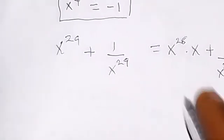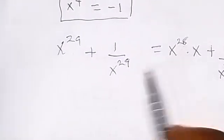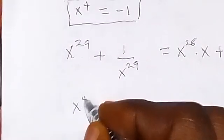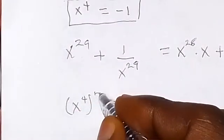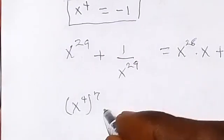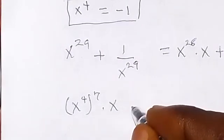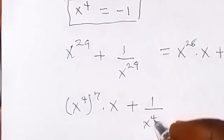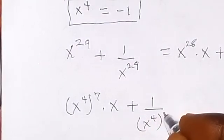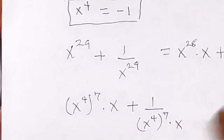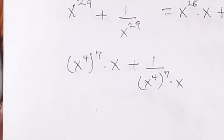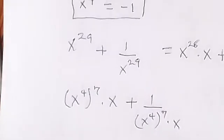So we have x to the power 4 raised to the power 7, times x, plus 1 over x to the power 4 raised to the power 7, times x. We have now gotten x to the power 4 to be minus 1, so we substitute that in.